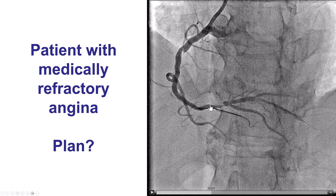The distal RCA lesion clearly needs to be treated. Our plan was to do physiology to determine whether the proximal lesion needs to be treated as well. As far as the plan for stenting, it's a 1-0-0. The PDA, which we call the side branch, doesn't seem to have significant stenosis. So our plan was to do provisional stenting, stenting from the distal RCA into the right posterior lateral.